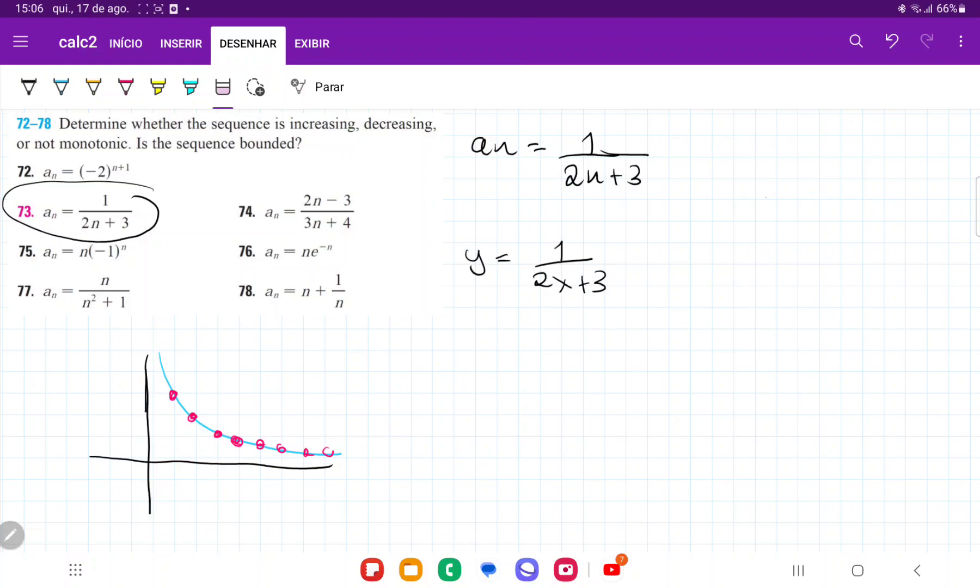And the reason that we want to represent this with a function is because we can take the derivative, and remember that the derivative tells us the rate of change. So if the derivative is positive, it means that the function is always increasing. And if the derivative is negative, it means that the function is always decreasing.